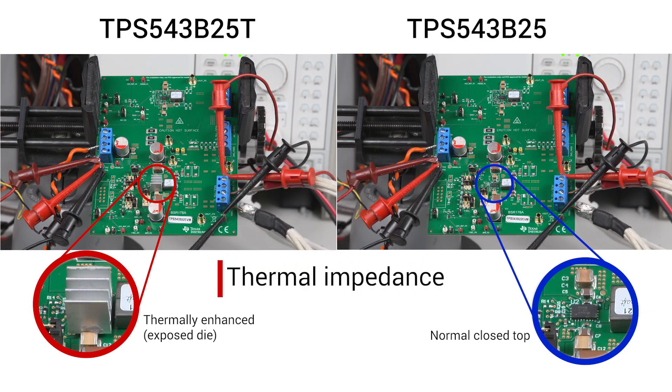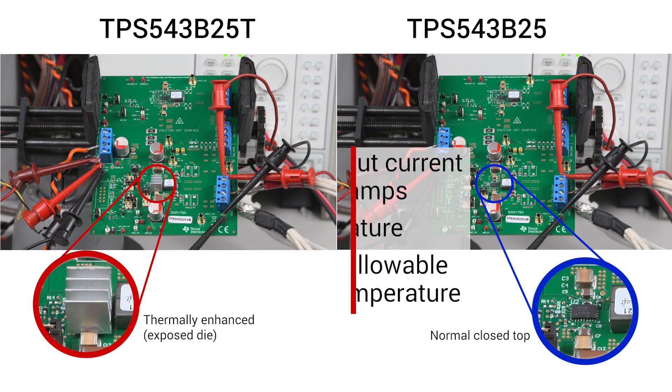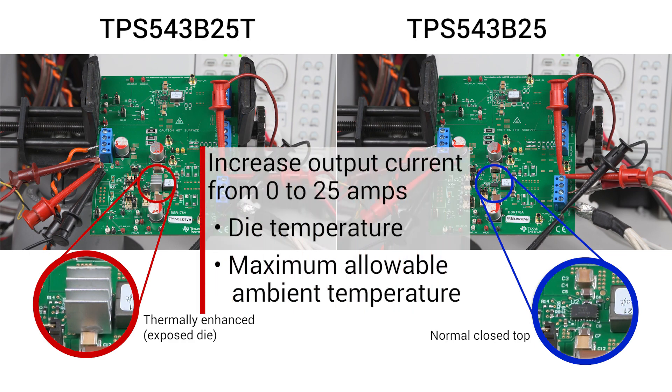We will first measure the thermal impedance of both devices. We will also increase the output current from 0 to 25 amps and plot the die temperature as well as the maximum allowable ambient temperature throughout the entire output current range.